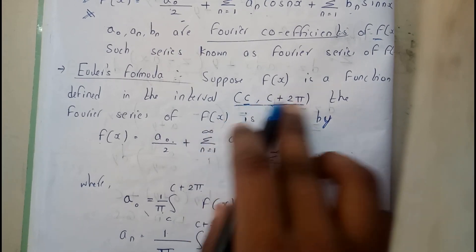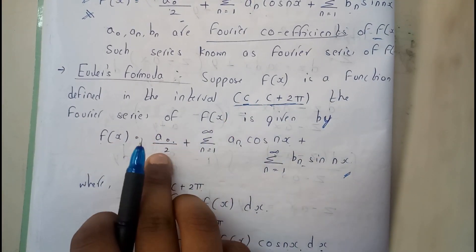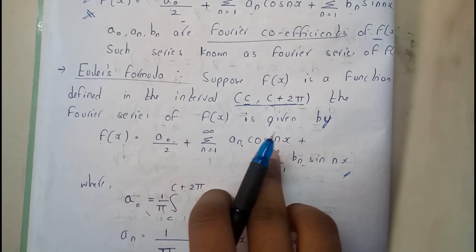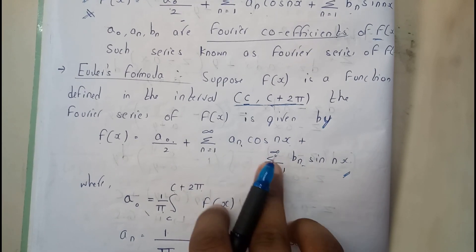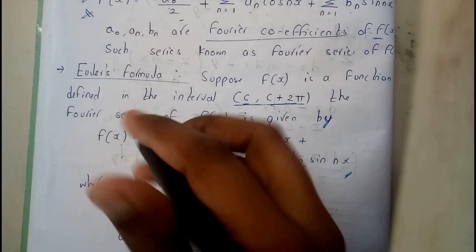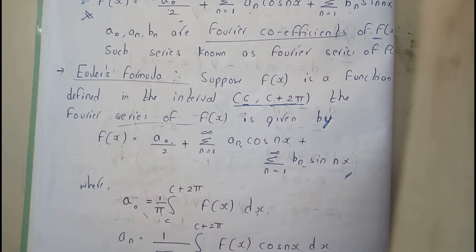So for the intervals like this, f(x) = a₀/2 + Σ(n=1 to ∞) aₙcos(nx) + Σ(n=1 to ∞) bₙsin(nx). So this is the main formula.